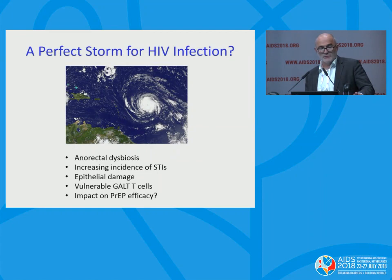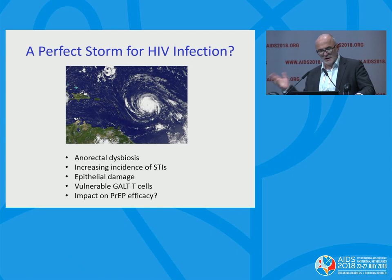Perhaps a perfect storm for HIV acquisition: anorectal dysbiosis, increasing STIs, epithelial damage. Multidrug-resistant gonorrhea is another thing we should be worrying about. And regarding PrEP efficacy — I think Mike argued STIs wouldn't impact it, and I'd probably agree if someone's on steady-state Truvada, but if they're tailing off, then I'm not sure.